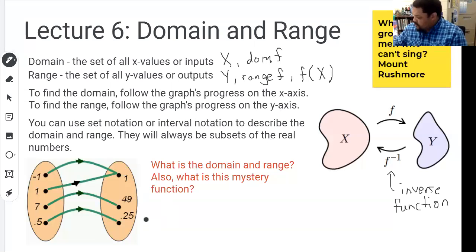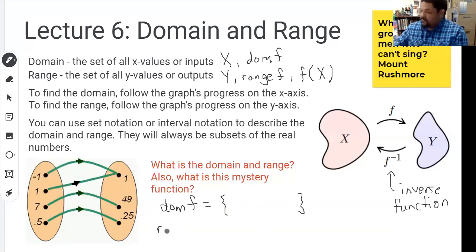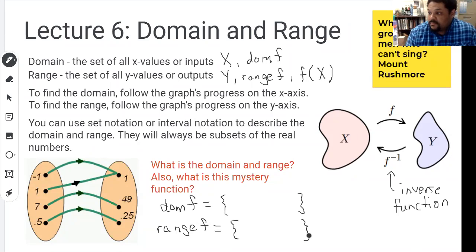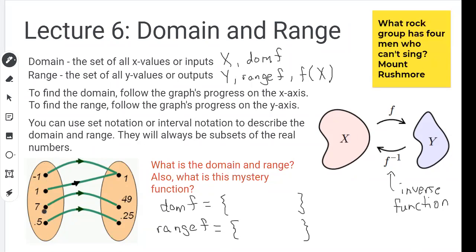Here's a little problem. What is the domain — DOM of F — and what is the range? The domain is the set containing all the X values, and the range is the set containing all the Y values. So which elements are in the domain? We have negative one, positive one, positive seven, and point five — which is basically one half. So I'm going to put in negative one.